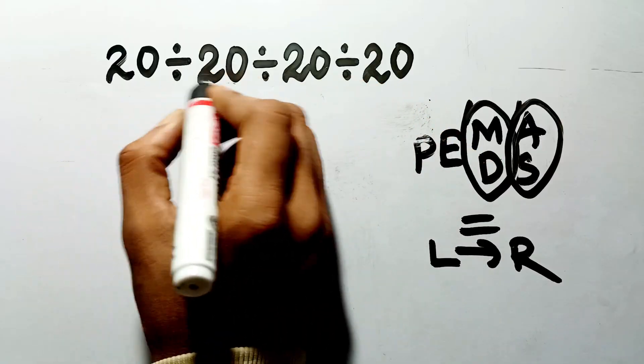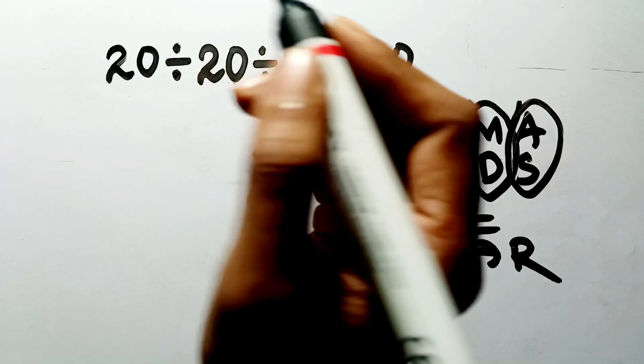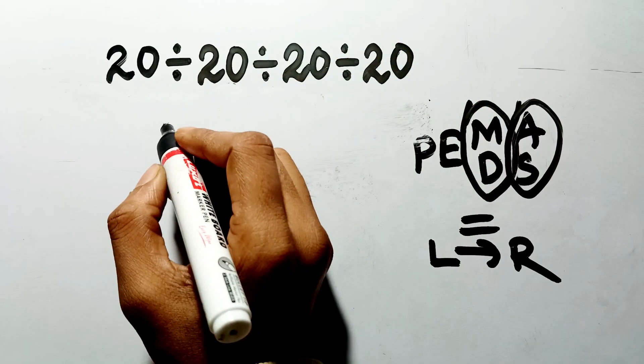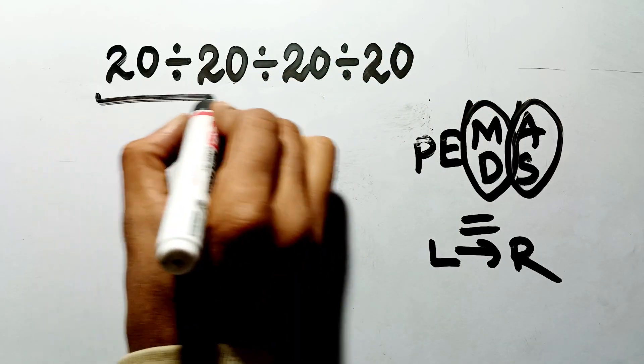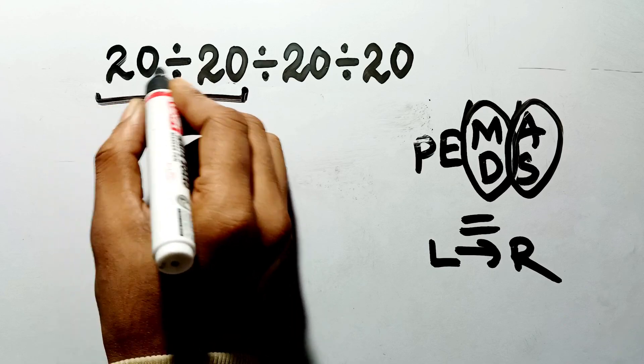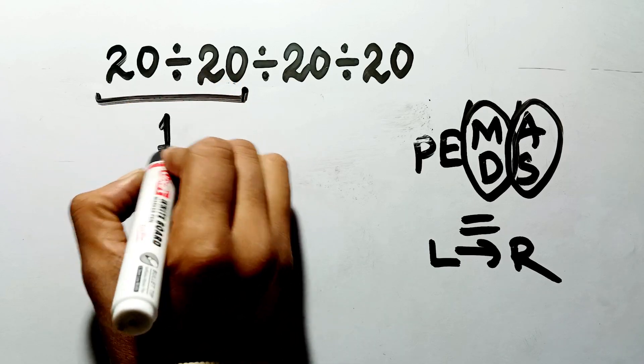If we do this last division before the first ones, or try to group them nicely, it is wrong. So, first this division on the left. 20 divided by 20 gives us 1.